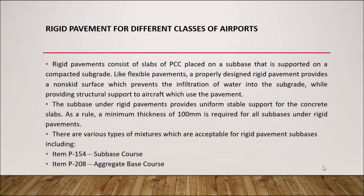We start with rigid pavement for different classes of airports. Rigid pavement consists of slabs of PCC — Portland Cement Concrete — placed on a subbase that is supported on a compactable subgrade. Like flexible pavements, a properly designed rigid pavement provides a non-skid surface which prevents the infiltration of water into the subgrade while providing structural support to aircraft which use the pavements.